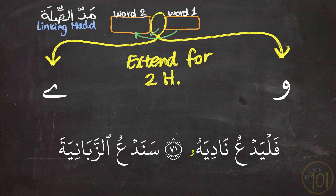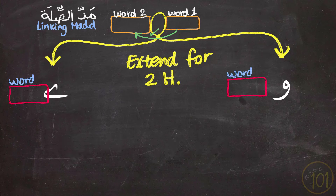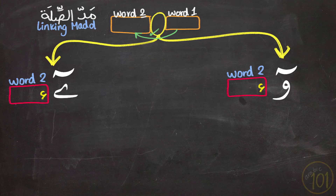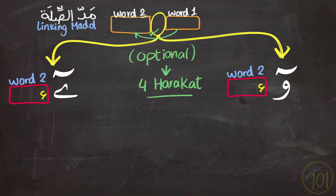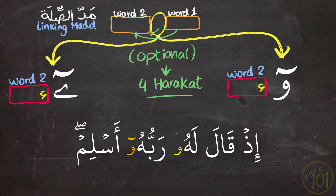Linking Mad is extended for two Harakāt. However, if the first letter of the following word is a Hamza, then a sign will appear on top to show you that you have the option to extend it for four Harakāt — like the Mad Munfasil. As you can see, there are two Linking Mads one after the other. The first is a normal Linking Mad without extension. The next one has the Mad sign on top because the following word starts with a Hamza, so you have the option to extend or not.